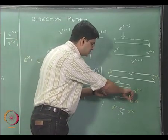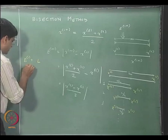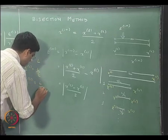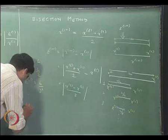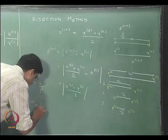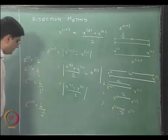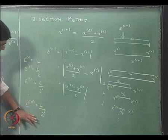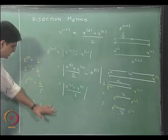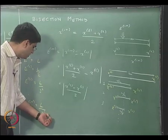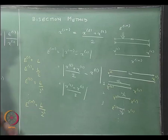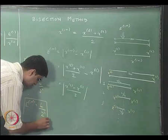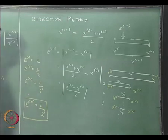Our e_2 is nothing but L by 2, e_3 was L by 2 squared, and so on. Our e_(i+1) is nothing but L divided by 2 to the power i. This is the error in the current iteration of the bisection method. As the number of iterations increase, every time we are going to halve the particular error that we have.